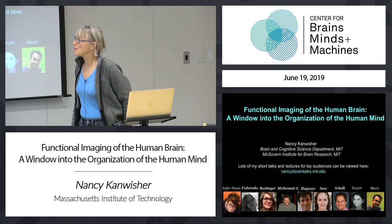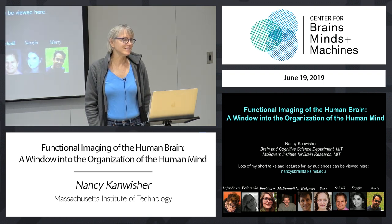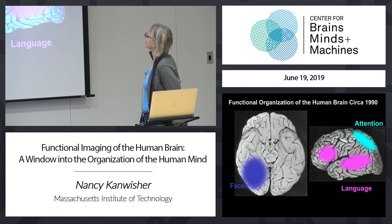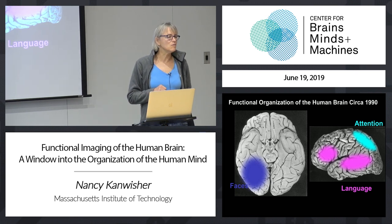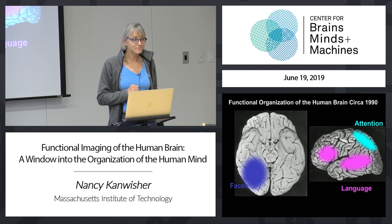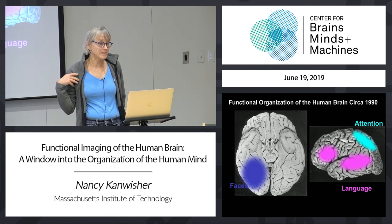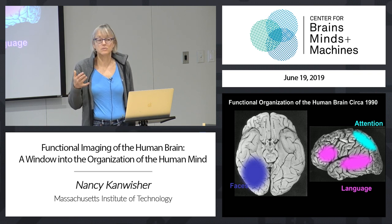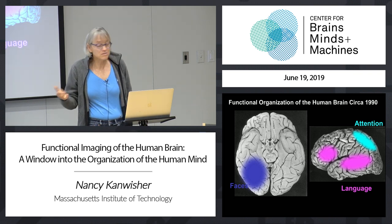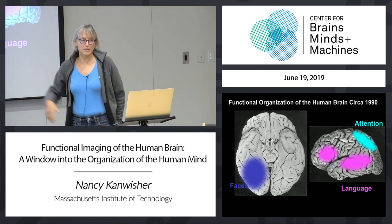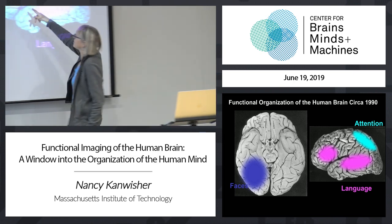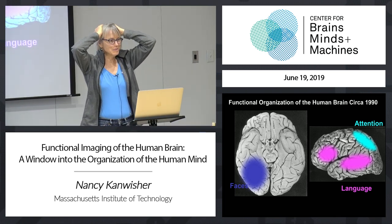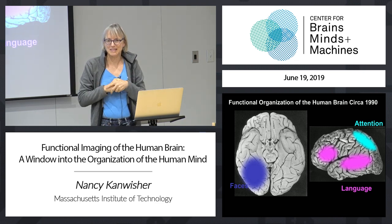I want to start by making the simple point that we've made a huge amount of progress in human cognitive neuroscience in the last 20 years. To appreciate that, it helps to step back to what we knew just a couple decades ago. Around 1990, we knew from studies of patients with brain damage that damage in certain areas could cause loss of face recognition while preserving recognition of words, objects, and scenes. We knew for 200 years that damage to the lateral left hemisphere could cause language problems, and damage to the parietal lobes would cause problems with visual attention.